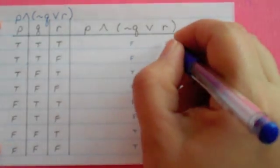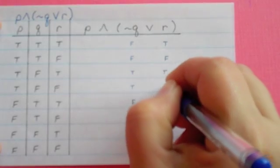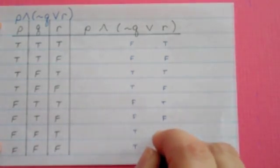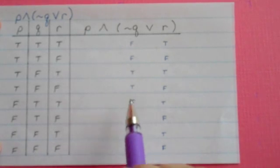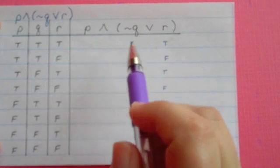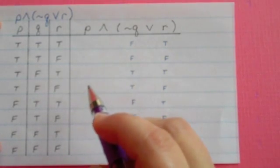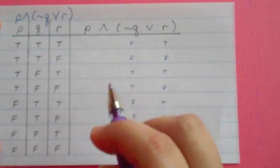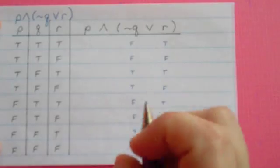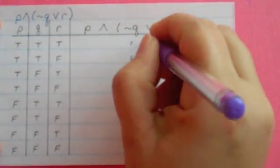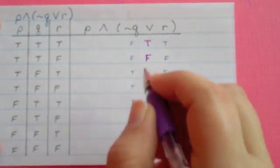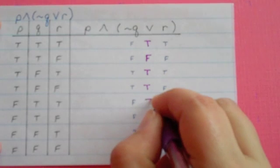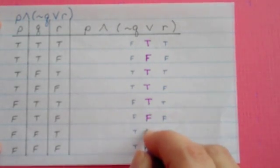The next thing I'm going to look at is R. R just alternates between true and false. My next step is to take these two columns — NOT Q and R — and apply the OR to them. Remember the rule for OR: if there's a true, it's true. So I'm going to go down the column: there's a true — it's true. No true — it must be false. And continue in that same fashion down the table.